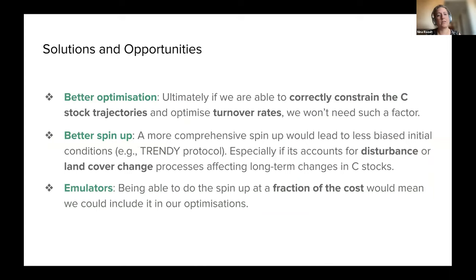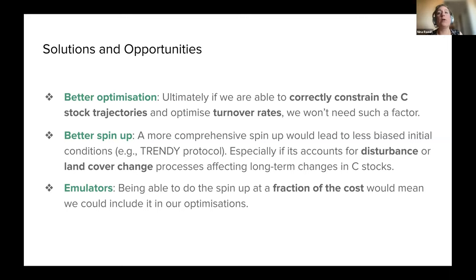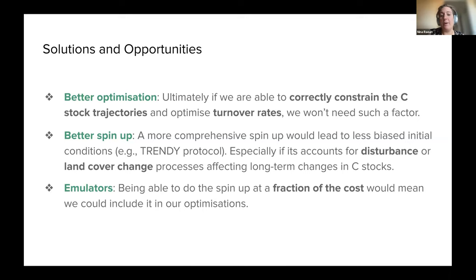Ultimately, we don't want to rely on this kind of factor. If we could accurately constrain the carbon trajectories and optimize the turnover rates, we wouldn't need it — but we're not there yet. One option is a better spin-up: following more of a TRENDY protocol, accounting for land use change and disturbances in the transient run, which would make us less biased when we start our optimizations.